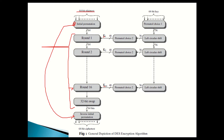In each round we perform operations such as XOR and permutation. For the key, each round key is 48 bits, but originally the key was 64 bits. The key is first transformed through an operation called PC1 — Permutation Choice 1 — which is a matrix that rearranges the bit positions inside the key. This PC1 operation produces 56 bits from the original 64-bit key.